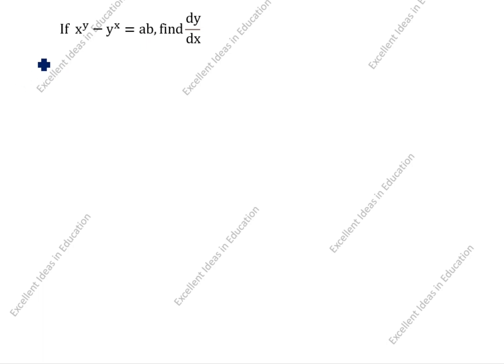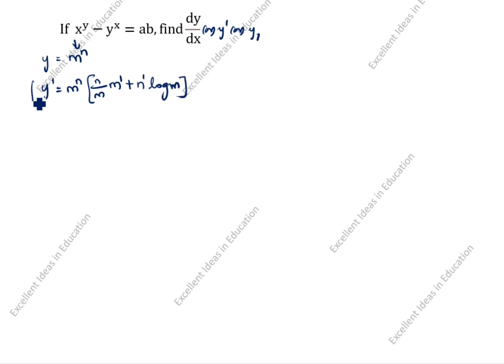Now we will see the m power n format. We will write m power n. You see here x power y is in m power n format, so we will write y is equal to m power n. dy by dx, or y dash, or y1 are the same. We will differentiate m power n. The formula is: y dash is equal to m power n, times n by m times m dash, plus n dash times log m. So this is the formula.